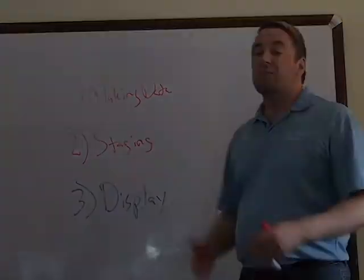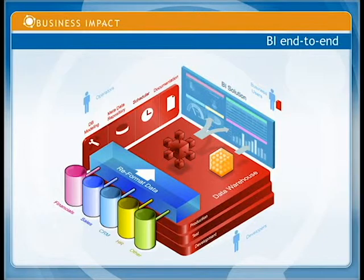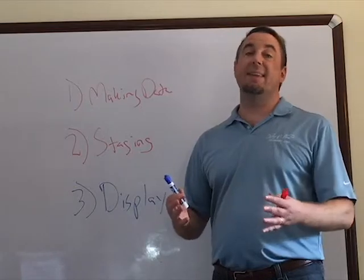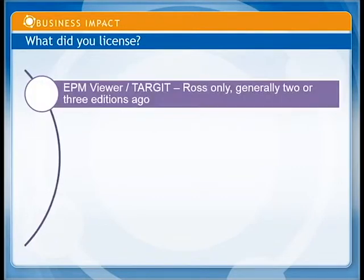Those are the three steps in EPM coming out of your raw system. A quick graphic shows data sources flowing left to right into the data warehouse, creating the cube, and then the cube being fed into the display. Regarding licensing: the EPM Viewer, or Target, is the display tool. EPM Viewer is designed only to display Ross data. If you want to bring in external data, you need to extend that license to a full Target license.